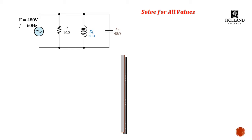Here we have a source voltage of 480 volts, single-phase 60 hertz, a resistance of 10 ohms, an inductive reactance of 20 ohms, and a capacitive reactance of 48 ohms. The easiest way to solve this type of problem is to use the currents, because currents add nicely, albeit vectorially, in an RLC parallel circuit.